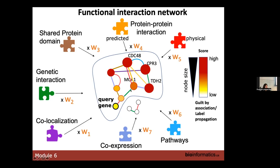Because the query gene is connected to this node, we can also predict by guilt by association that gene A is related to function A, because it is functionally related to other genes known to have function A. Conversely, we could not assign function B to this node because they are not related.